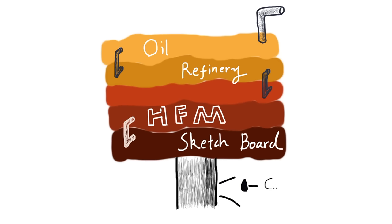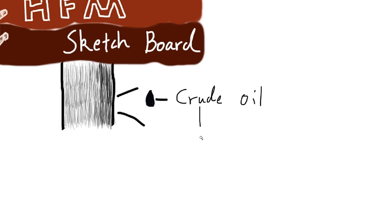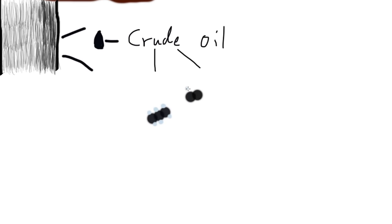Today we're going to talk about the oil refinery process. This process starts with crude oil. Inside crude oil, we have all different types of oils that have different molecular geometries.